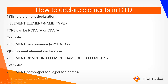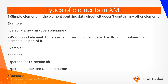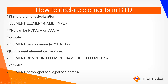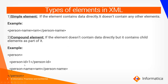Now how to declare elements in DTD. To declare a simple element, the syntax is: ELEMENT, element-name, and type. The type can be #PCDATA or CDATA. PCDATA means Parsed Character Data, CDATA means Character Data. For example: ELEMENT person-name #PCDATA — I am declaring person-name as parsed character data. For a compound element, the syntax is: ELEMENT, compound-element-name, followed by the child elements in brackets.